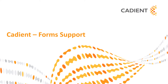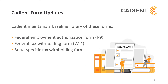Let's review how Cadient provides support for forms. Cadient maintains a baseline library of the Federal Employment Authorization Form, the I-9, as well as the Federal Tax Withholding Form, known as the W-4, and state-specific tax withholding forms. Cadient updates these forms for our clients' use, in addition to maintaining the onboarding scripts that streamline the completion of these forms for new employees.